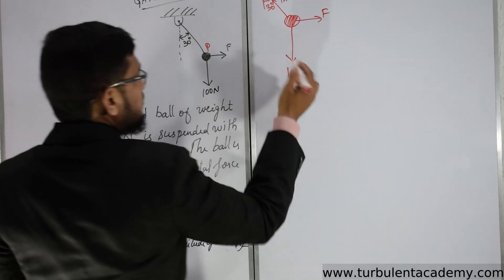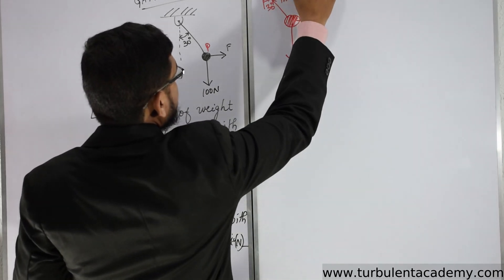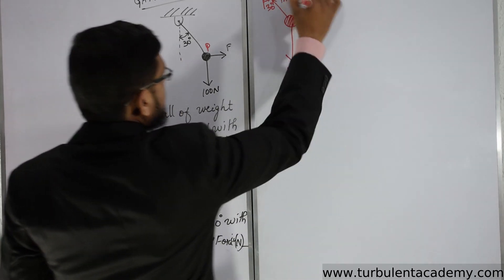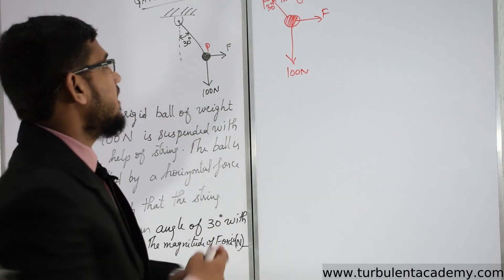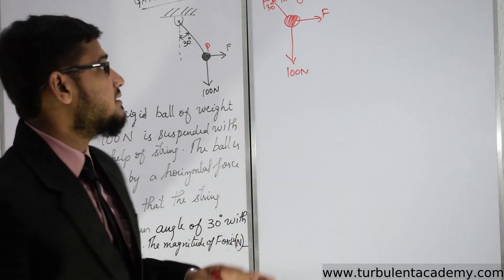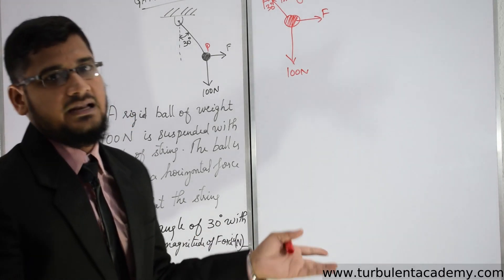So we have drawn an FBD. We have three forces and everything is in place. We just need to find the angles, apply Lamy's theorem, get the answer. Very simple.